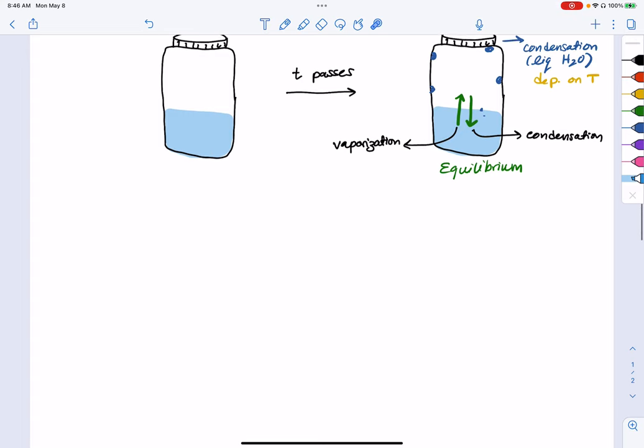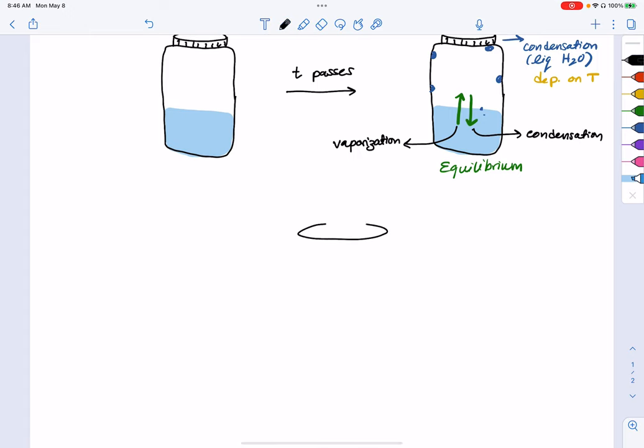Okay, so we will call vapor pressure P_vape because what P_vape is, is now that we've got our water bottle, and it's closed up nice and tight so that there is a closed system that allows our phase equilibrium to be established at whatever temperature our system's at. We will have both liquid water and gaseous water in this constant kind of exchange back and forth between vaporization and condensation.